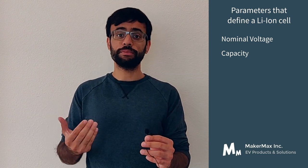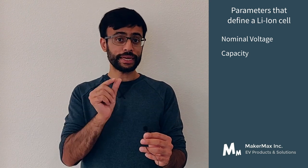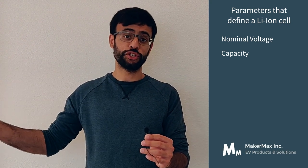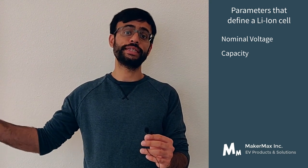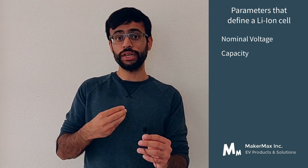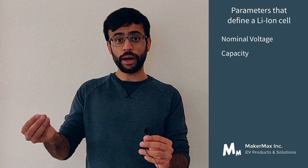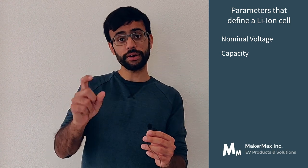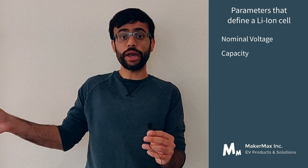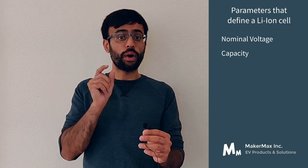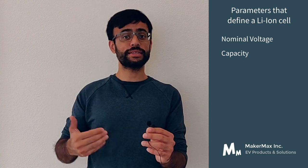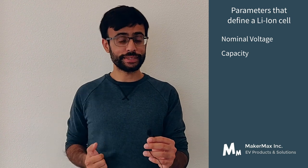Capacity doesn't always refer to the fully charged state. You can also use ampere-hours to describe the remaining charge inside the cell. For example, a 2Ah cell with 1Ah remaining means its state of charge is 50%.